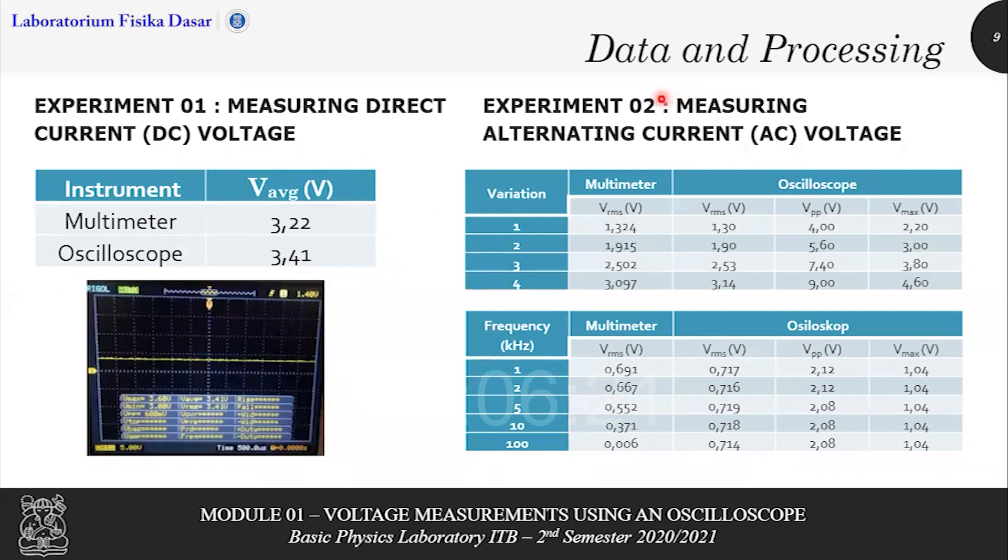For experiment two, measuring alternating current or AC voltage, we will have two variations. The first variation, we make the frequency as a constant value of one kilohertz while we differentiate the Vpp. And then the second variation, we make the Vpp as constant as possible to 2.4 volts and we differentiate the frequency to one, two, five, ten, and 100 kilohertz.